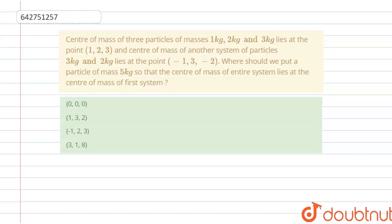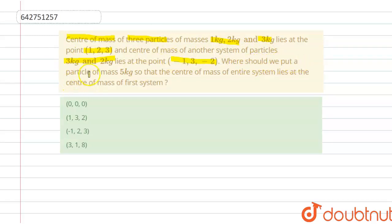Hello students, here is a question. Center of mass of three particles of masses 1 kg, 2 kg and 3 kg lies at (1, 2, 3), and center of mass of another system of particles 3 kg and 2 kg lies at (-1, 3, -2). Where should we put a particle of mass 5 kg so that the center of mass of the entire system lies at the center of mass of the first system?